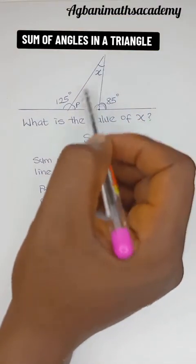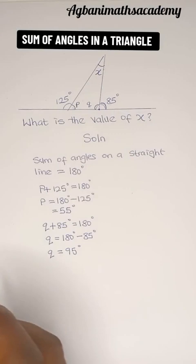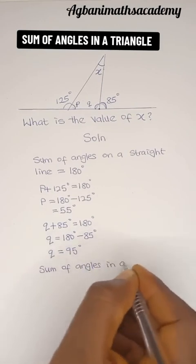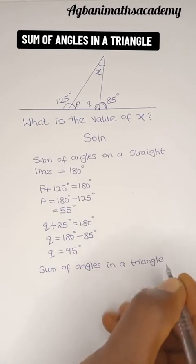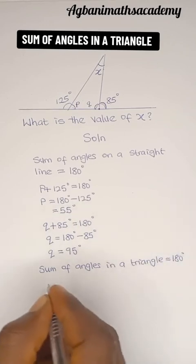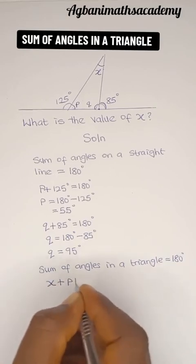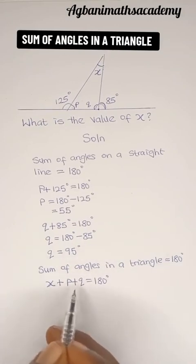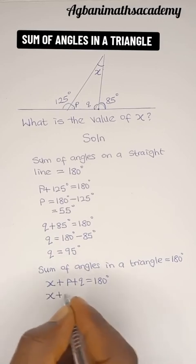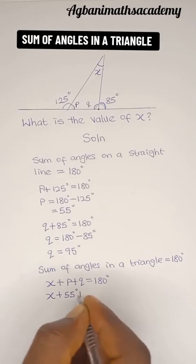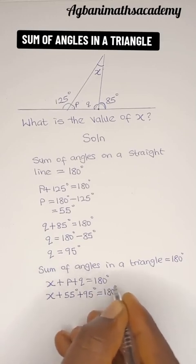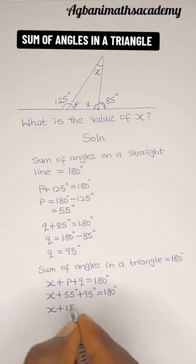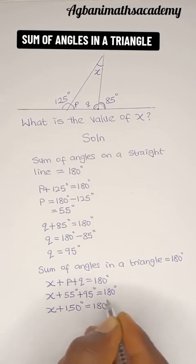It's 95 degrees. Therefore, if we sum all three angles, we're going to have 180 degrees. Sum of angles in a triangle equals 180 degrees. This means X plus P plus Q is equal to 180 degrees. But now we know P to be 55 degrees and Q to be 95 degrees. So we have X plus 55 degrees plus 95 degrees is equal to 180 degrees. 55 degrees plus 95 degrees will give us 150 degrees. So X plus 150 degrees is equal to 180 degrees.